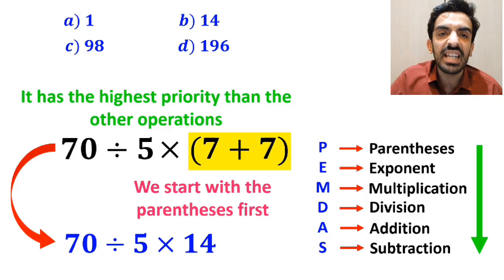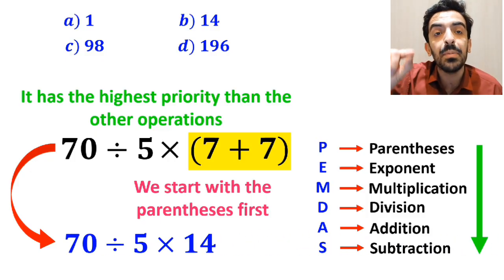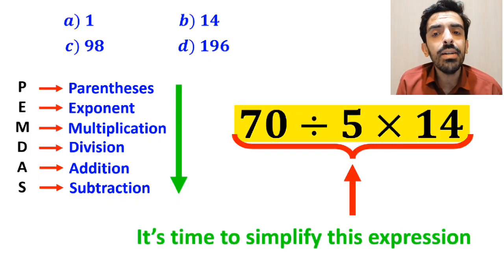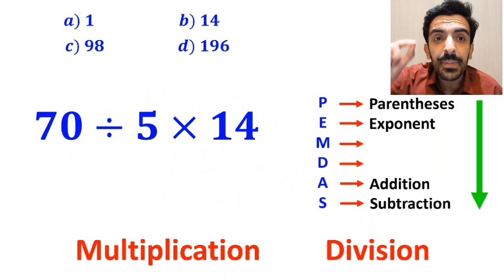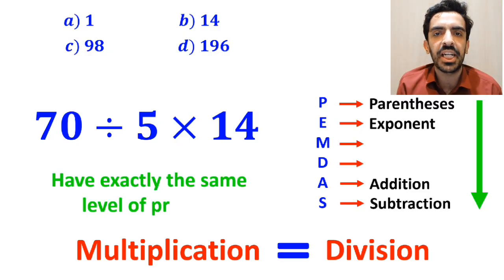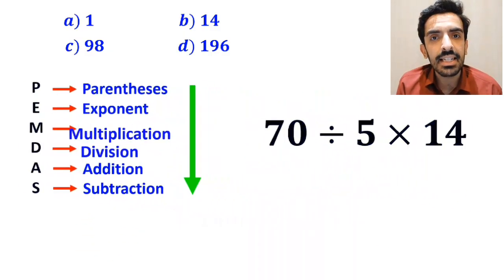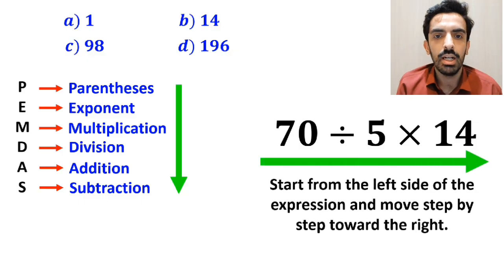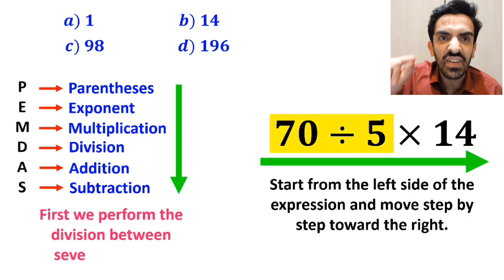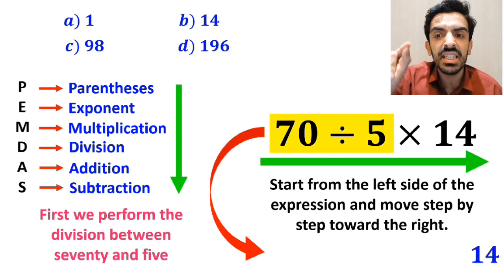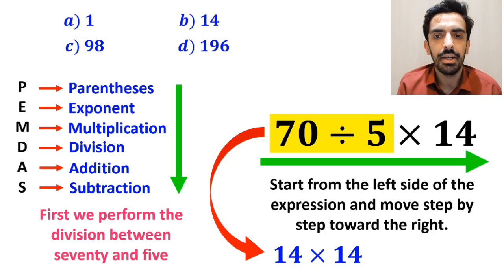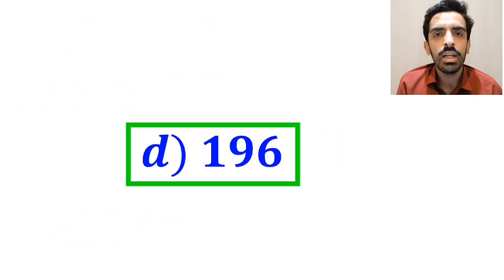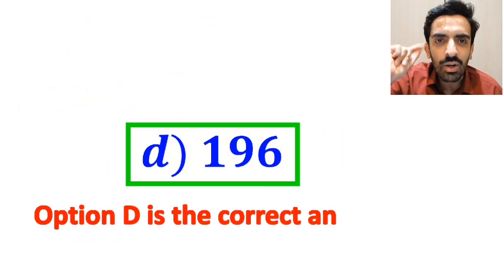This expression simplifies to 70 divided by 5, then times 14. Now it's time to simplify this expression. It's very important to note that in the PEMDAS rule, multiplication and division have exactly the same level of priority. In this case, all we need to do is to start from the left side of the expression and move step by step toward the right. So first, we'll perform the division between 70 and 5, which simplifies this expression to 14 multiplied by 14. Finally, the value of this expression will be 196. Therefore, option D is the correct answer to this question.